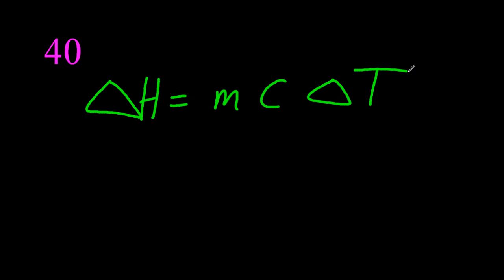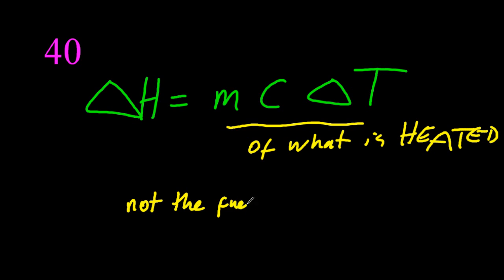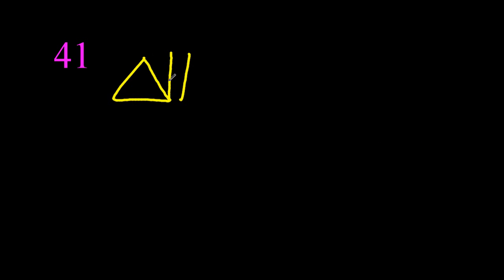Delta H equals MC delta T. The MC delta T refers to what is being heated, not what's doing the heating, it's what's being heated. They'll often give you numbers for both. Don't get them confused. And this never works, the experiment's rubbish. And they love to ask why.